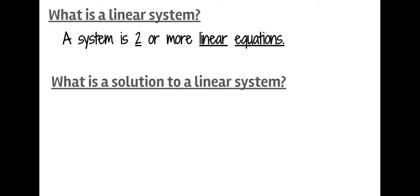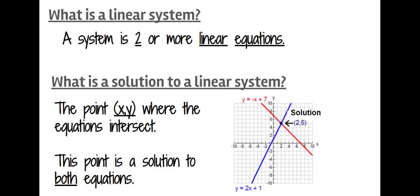So what's a solution? You have a solution to a system wherever the point is that the equations intersect. When you look at the two linear equations on this graph — the red one and the blue one — their solution is the point (2, 5) because they both intersect there. That point is a solution to both equations; if you plug it in for x and y it works for both.